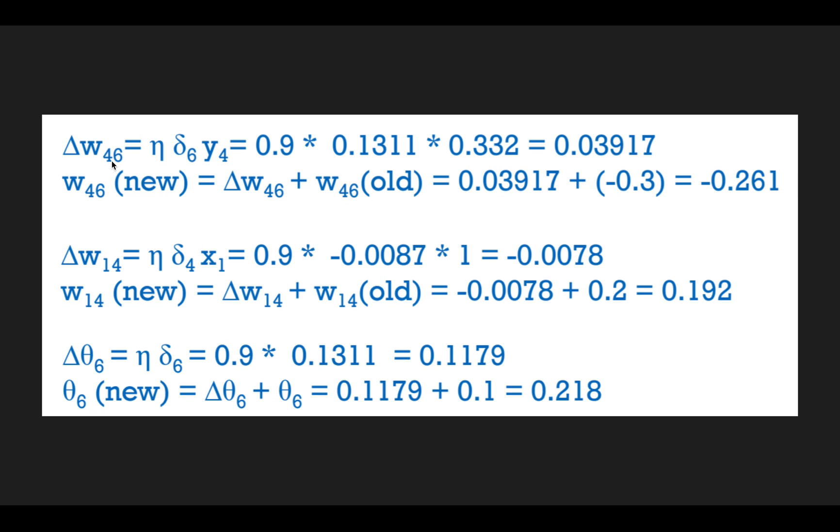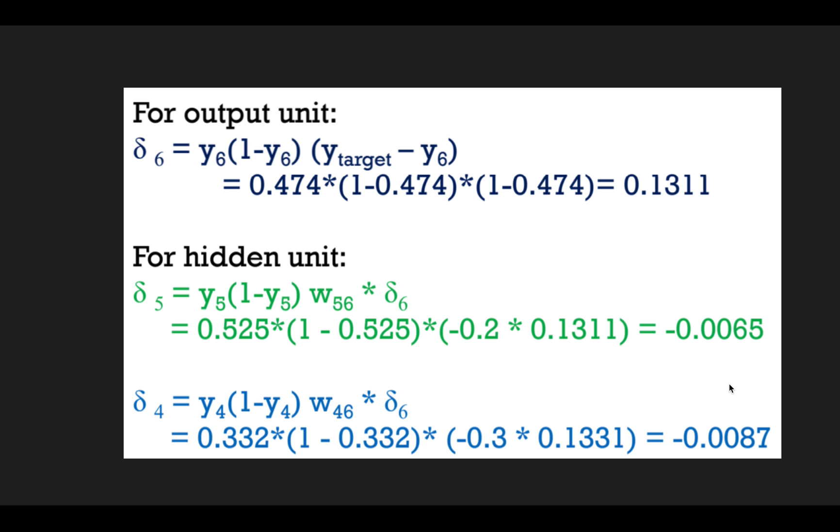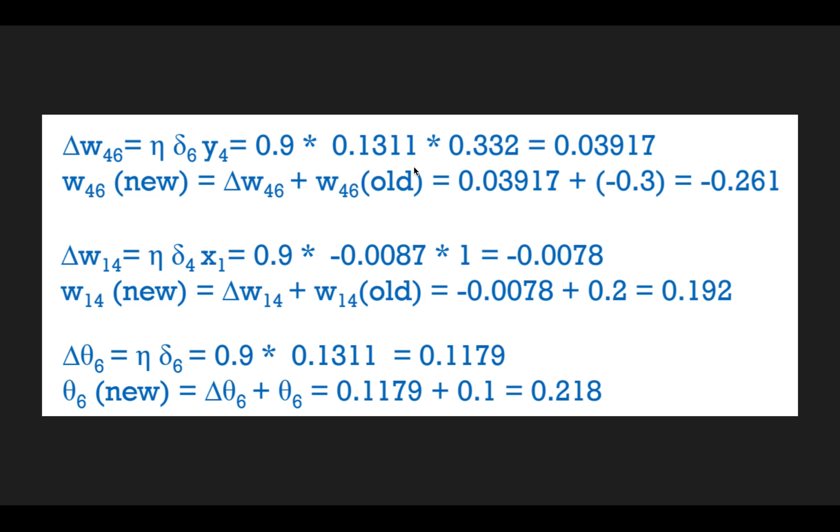Say for example w46, we will calculate by learning rate times delta_6 times y4. So we have given 0.9 as the learning rate, and delta_6 we have calculated over here is 0.1311, and y4 we have is 0.332. So we can get the delta value. Then we will add this delta value to the previous old value and we will get our updated w from the 4th node to the 6th node.